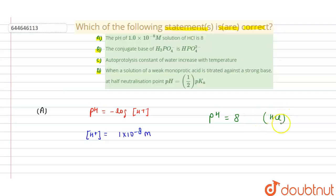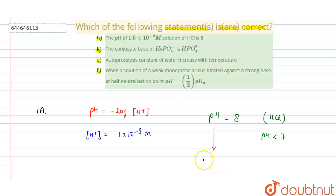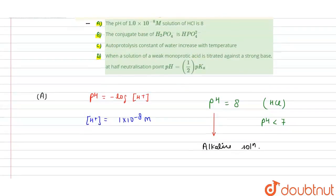But pH = 8 is for HCl, and HCl is an acid. An acid always has pH less than 7, so pH = 8 is not possible. A pH of 8 represents an alkaline solution, which is the condition for an alkaline solution. Therefore, option A is incorrect.